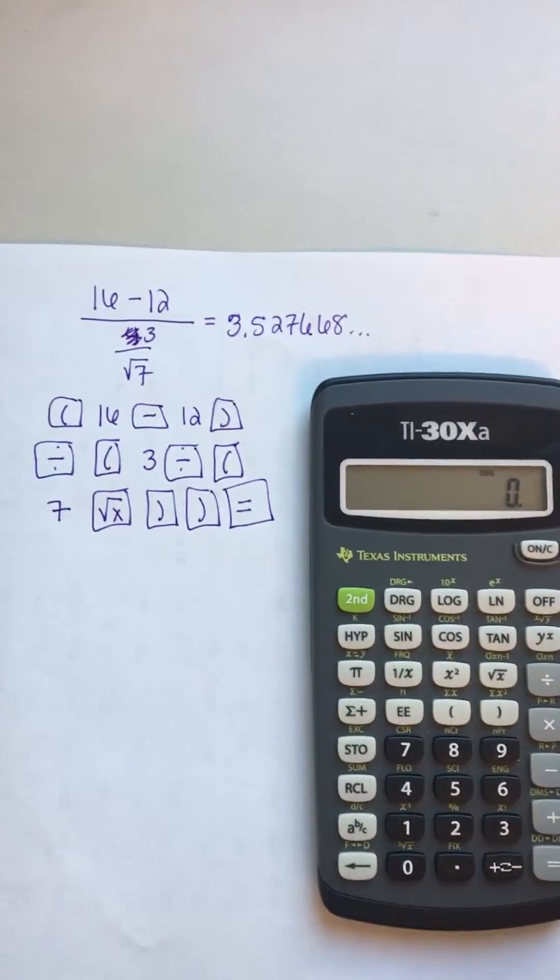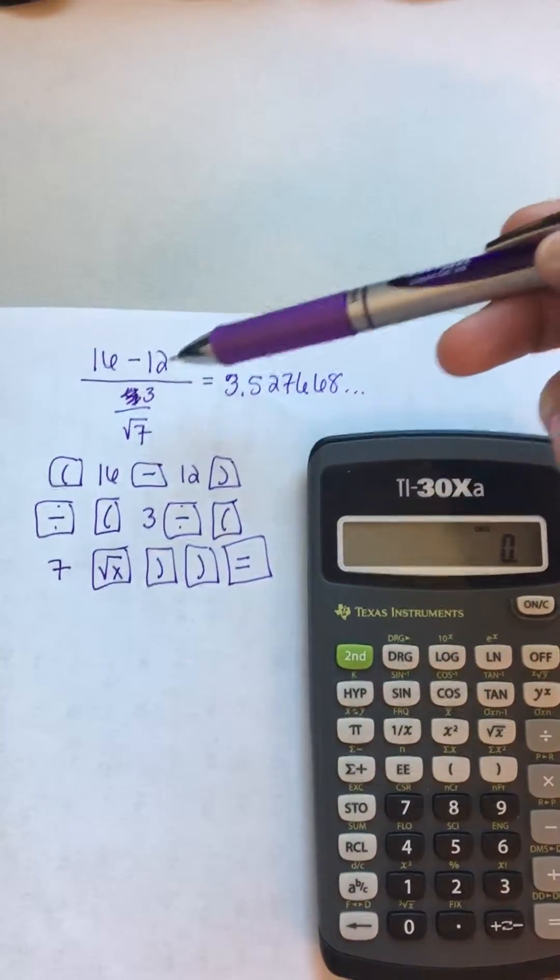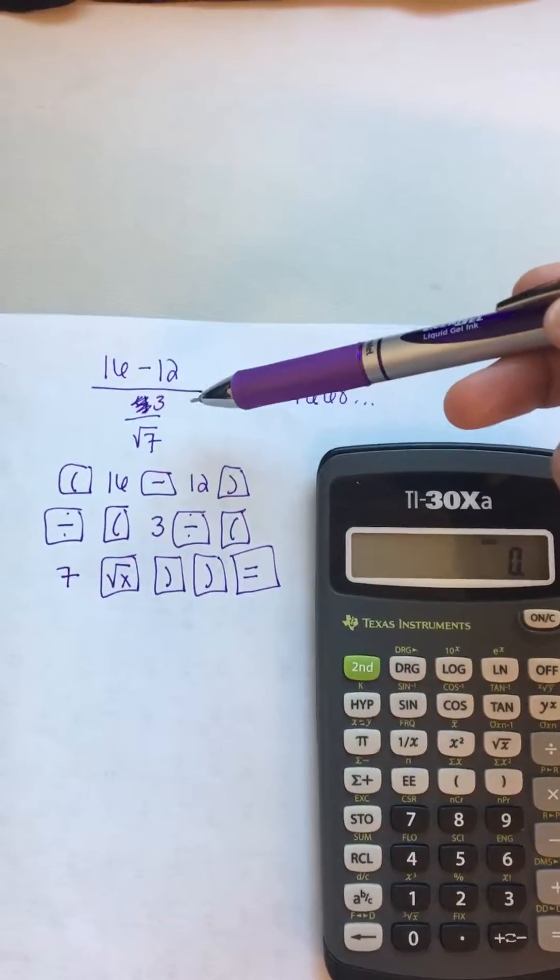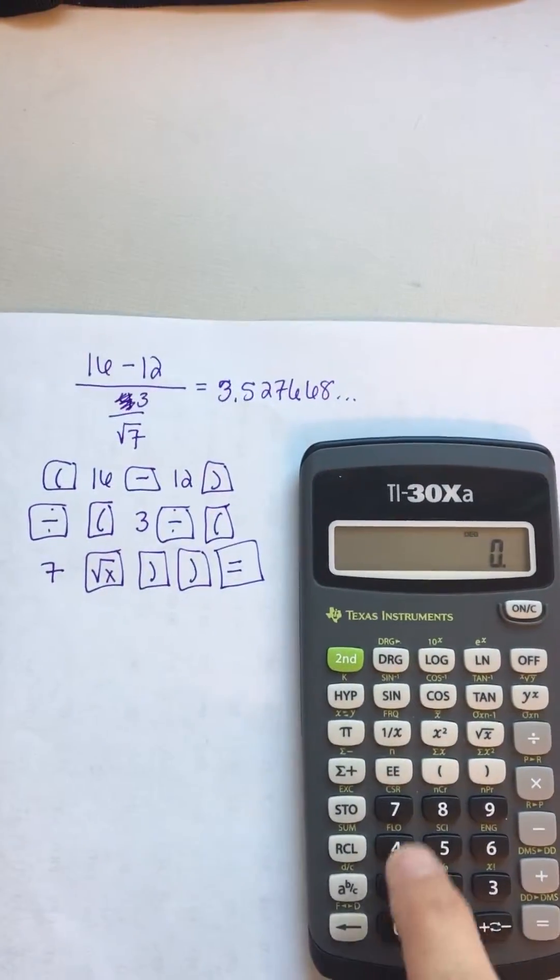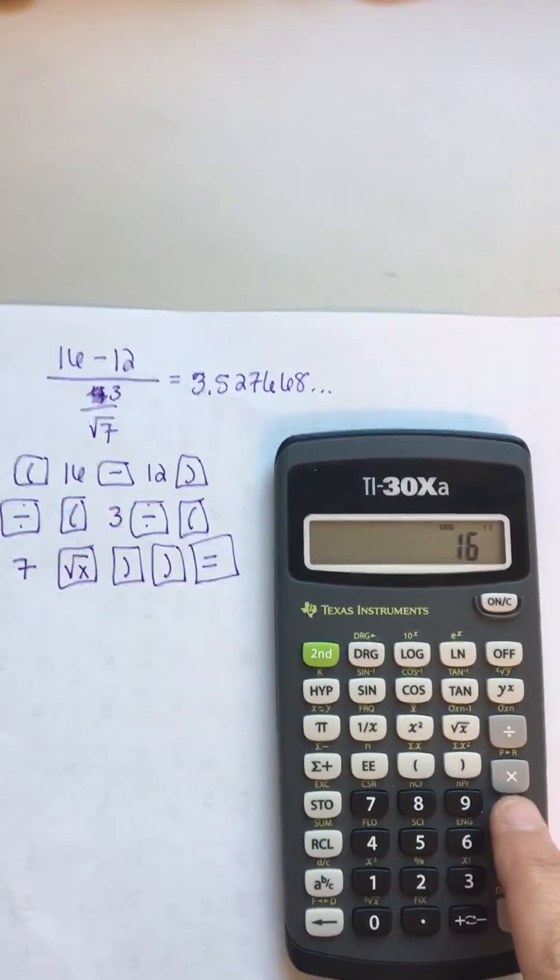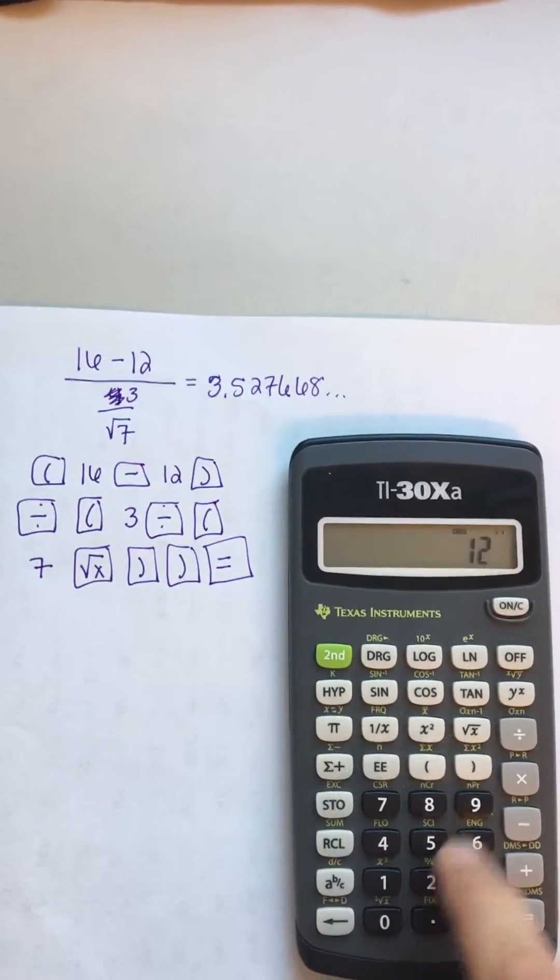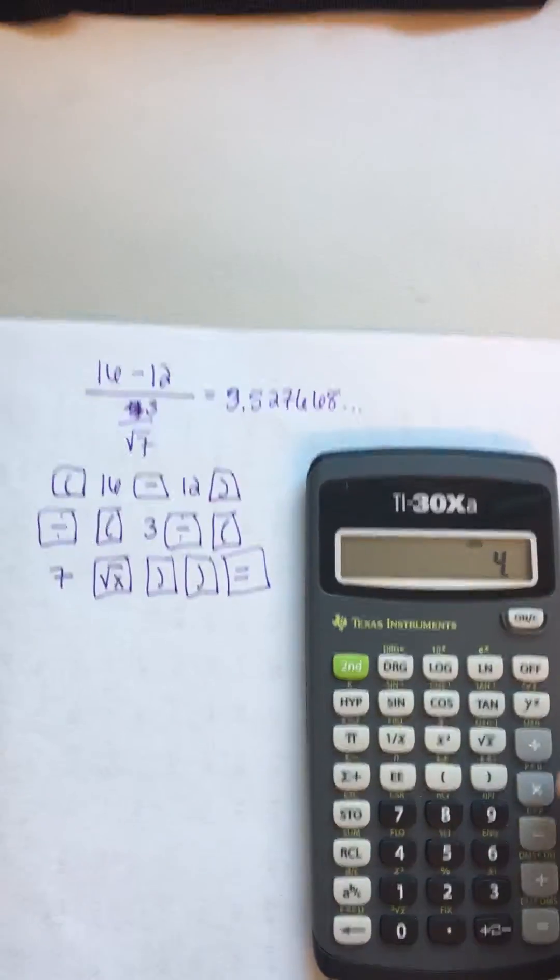Okay, I'm in class so this is a little loud, but basically if you need to do 16 minus 12 divided by 3, which itself is divided by the square root of 7, then what I wrote down is you're going to do parentheses 16 minus 12 and parentheses to close off the numerator, the top.